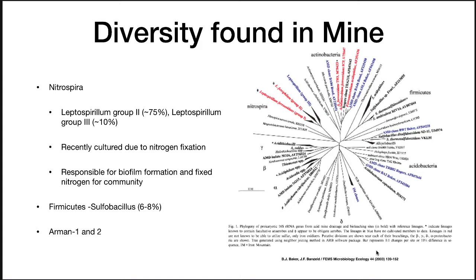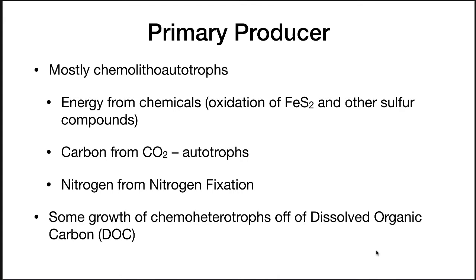There are also Firmicutes — another phylum — most of which are Sulfobacillus, along with some unique species never found before. Looking at what we've learned from this environment: the primary producers are mostly chemo-litho autotrophs. They get their energy from chemicals — the oxidation of iron pyrite and other sulfur compounds. They get their carbon from CO2, and they can fix nitrogen from nitrogen gas.